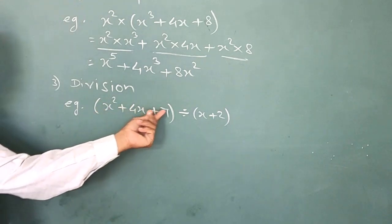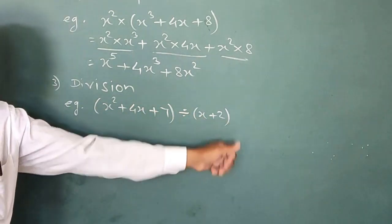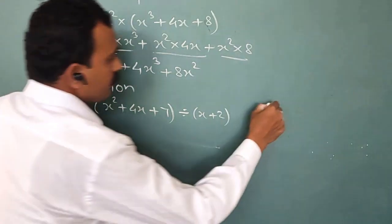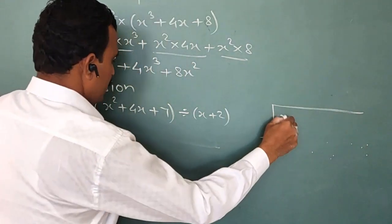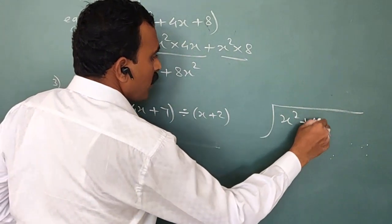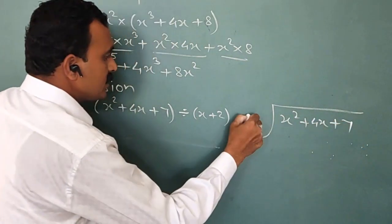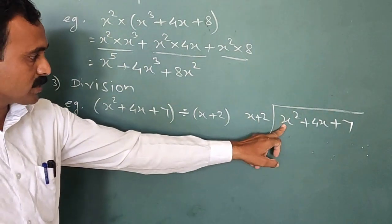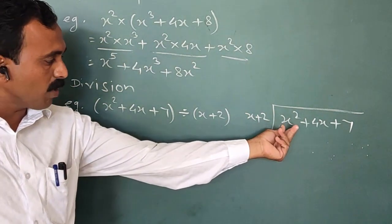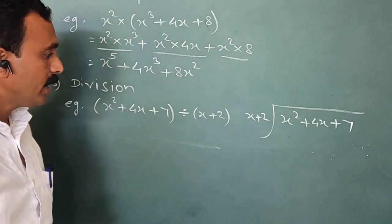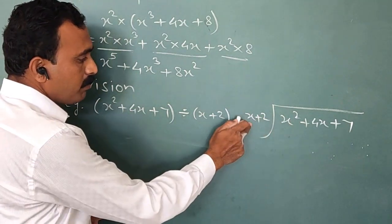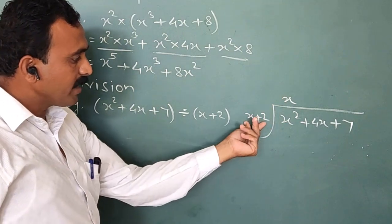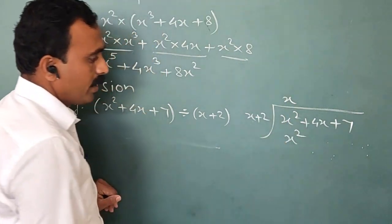Now the next operation is division: (x² + 4x + 7) divided by (x + 2). Here the dividend is x² + 4x + 7 and the divisor is x + 2. First, divide the first term of the dividend by the first term of the divisor: x² ÷ x = x. Now multiply x by the divisor: x × x = x², and x × 2 = 2x.